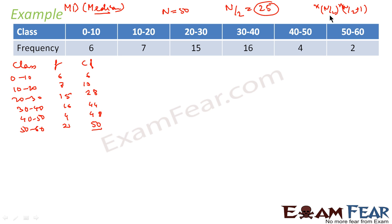For median, we don't worry about whether n is even or odd — we just find n/2 and locate which class it falls in. Here n/2 = 25. Looking at the cumulative frequencies — 13, 28 — we can see that 25 falls in the class 20–30, since the cumulative frequency goes from 13 to 28 in that interval. So the class 20–30 is where the median lies.